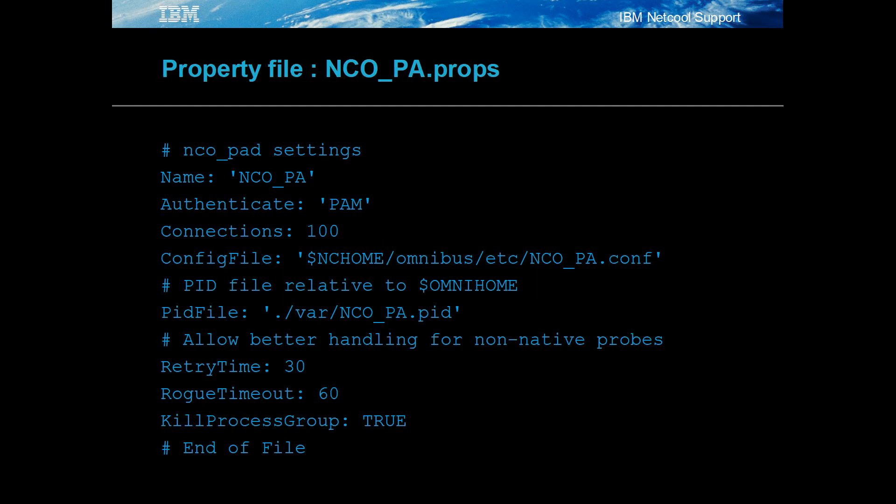Typically, NCO_PA.props uses the default settings. However, it is best to define the retry time and rogue timeout. In this example file, all of the required settings are provided. Note that the PID file is relative to OmniHome.